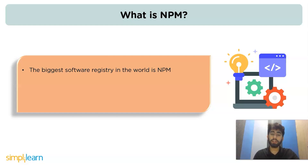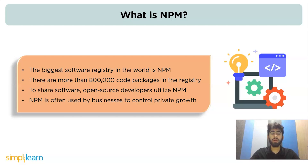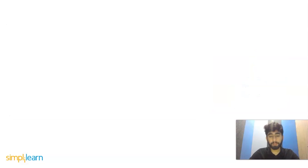The biggest software registry in the world is npm — there are more than 80 lakh code packages in the registry. Open source developers utilize npm to share software, and it is often used by businesses to control private development. All Node.js packages and modules are managed through npm, which includes the npm command line client. It is added to the system along with the installation of Node.js and is used to install the necessary modules and packages in a Node project.